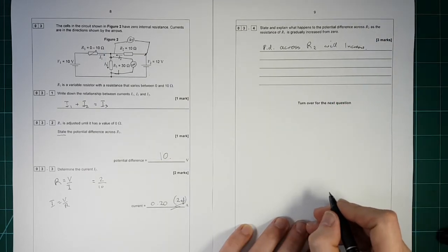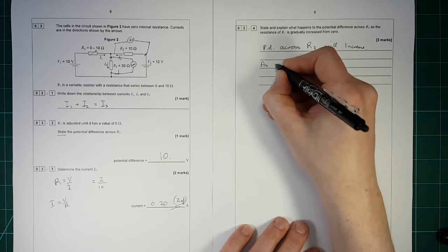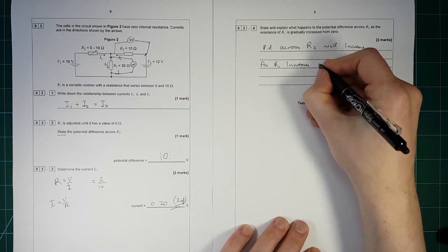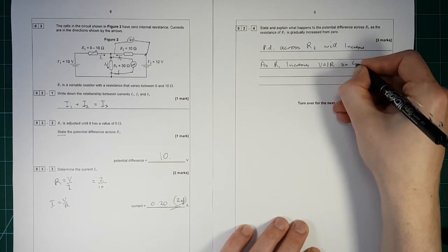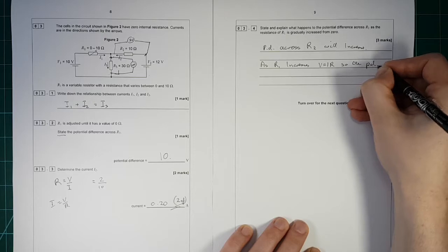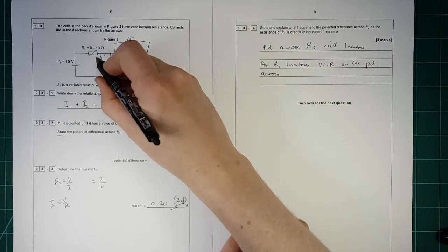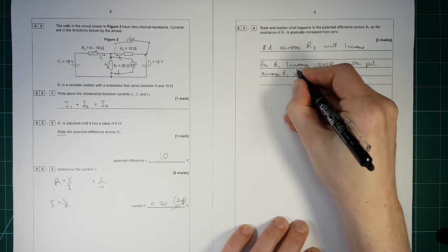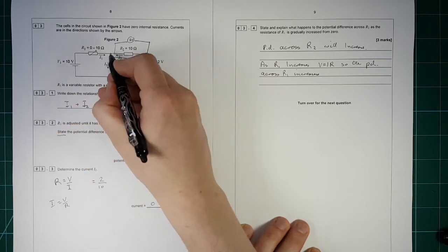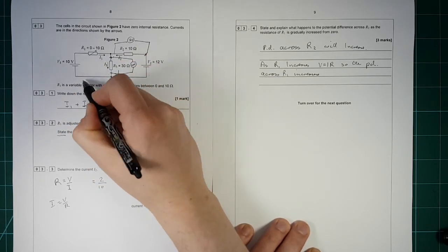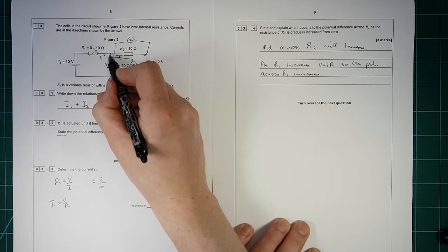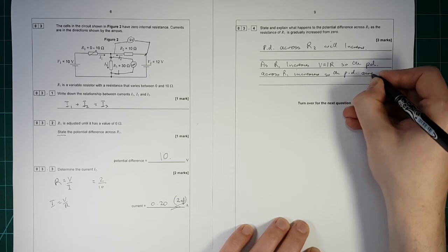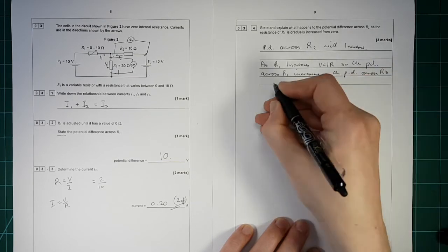Right, let me explain why that is again. So as R1 increases, V is equal to IR. So the PD across there increases, which means that there's less, because it's got to have 10 volts going around that loop there. So there's got to be less for R3. So the PD across R3 reduces.